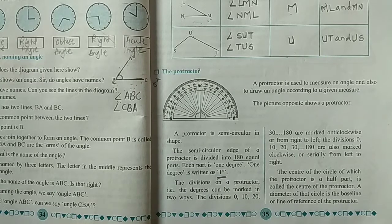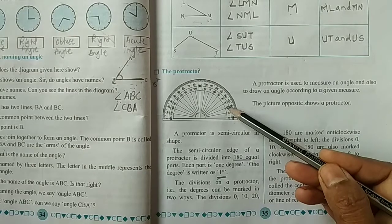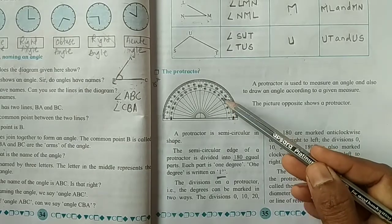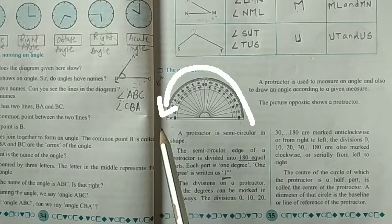The divisions on a protractor, that is the degrees, can be marked in two ways. The divisions 0, 10, 20, 30, 40, up to 180 are marked anticlockwise from right to left.